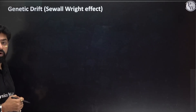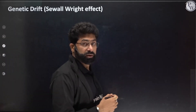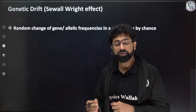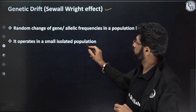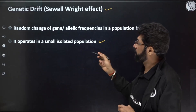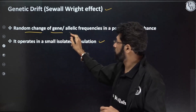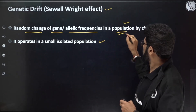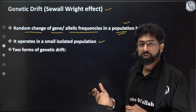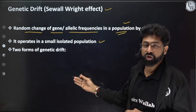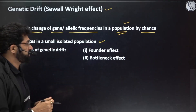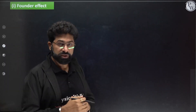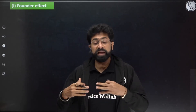Genetic drift — also called the Sewall Wright effect — always operates on a small, isolated population. In this, there is a random change in gene or allelic frequencies in a population, occurring by chance. There are two forms of genetic drift: the founder's effect and the bottleneck effect, which we will study in detail.